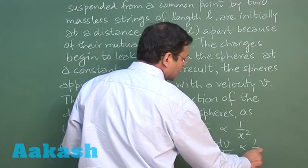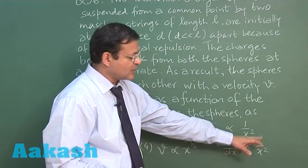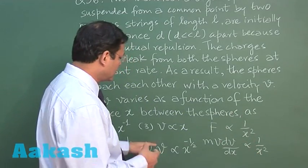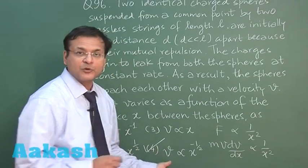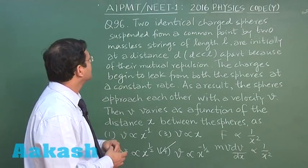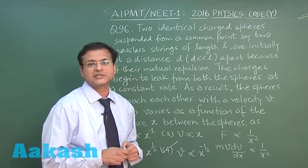You can clearly see this is v square and this is 1 by x, so v becomes proportional to x raised to the power minus half. Straightforward you can mark the answer 4 for this particular question. That was the answer to question 96. Now let us look at next question, that is question 97.